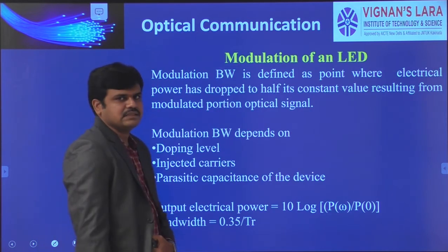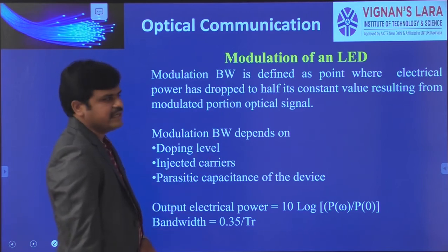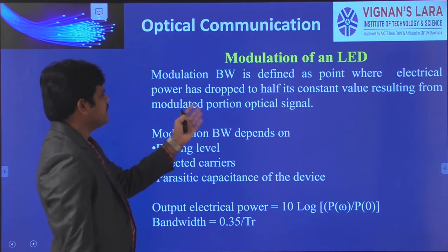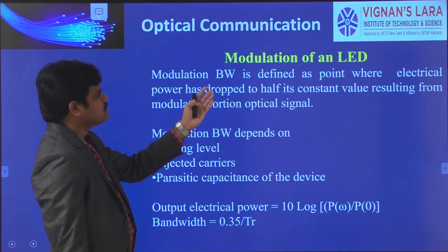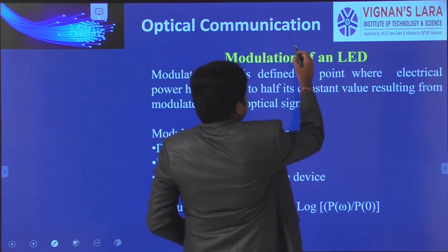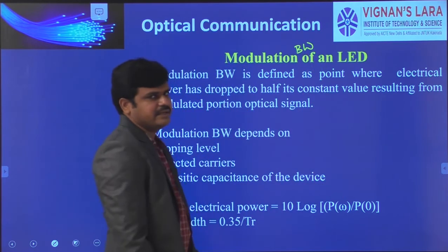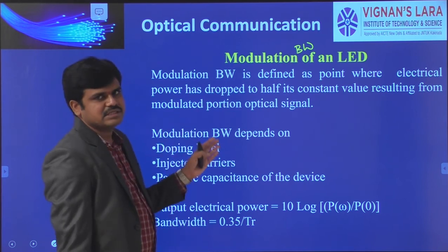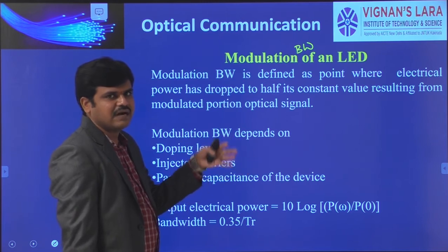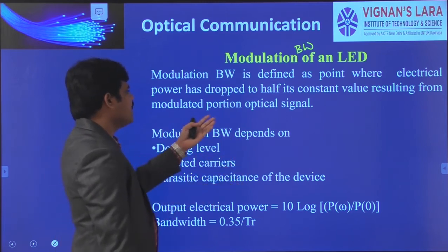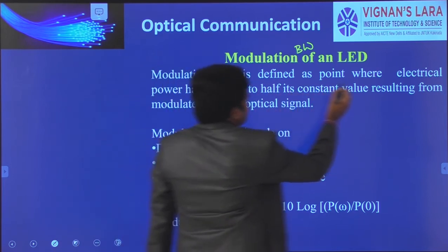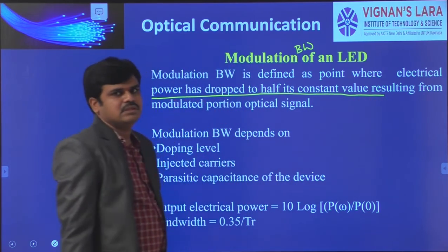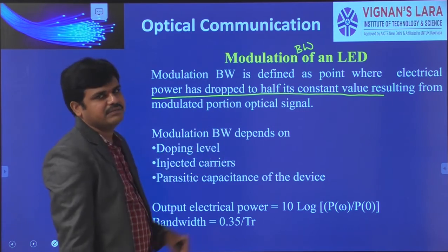Next we go to modulation of an LED. Modulation bandwidth is defined as the point where electrical power is dropped to 50%, or half, of the maximum power. This is called modulation bandwidth.